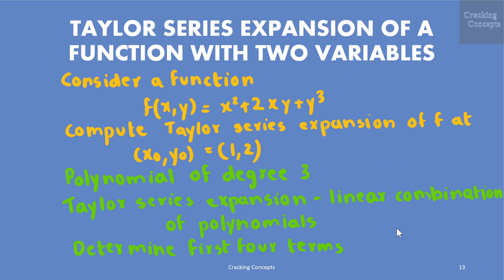Now let us look into the Taylor series expansion of a function with two variables. Consider f(x,y) = x² + 2xy + y³. We want to compute the Taylor series expansion at the point (x₀,y₀) = (1,2). Since f is a polynomial of degree 3, it should be sufficient to determine the first four terms of the Taylor series, as it will not contain terms of fourth or higher order.